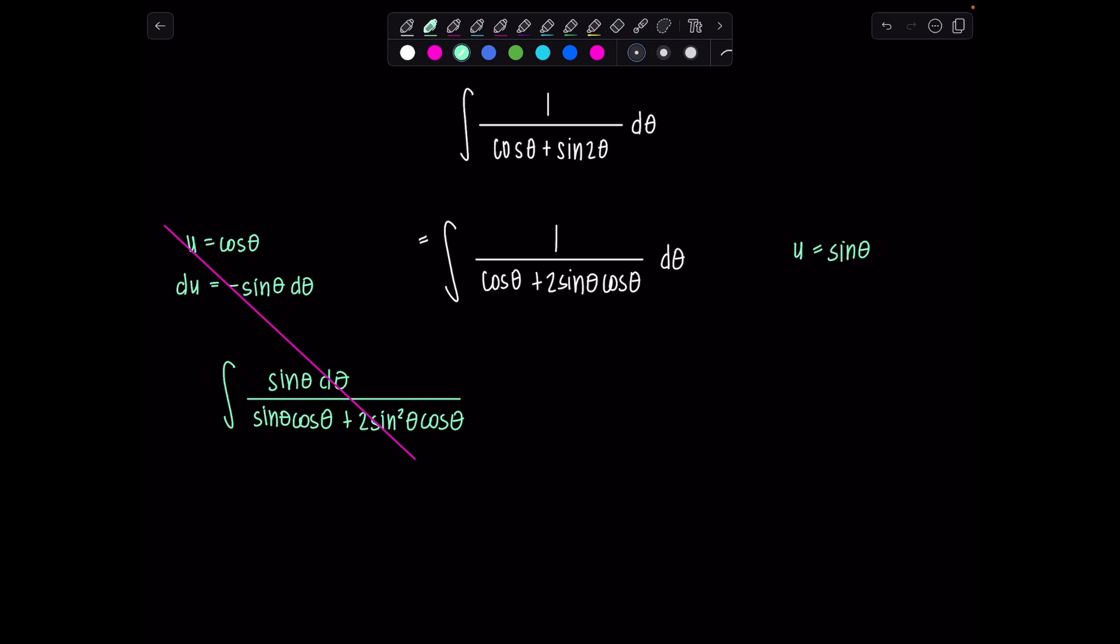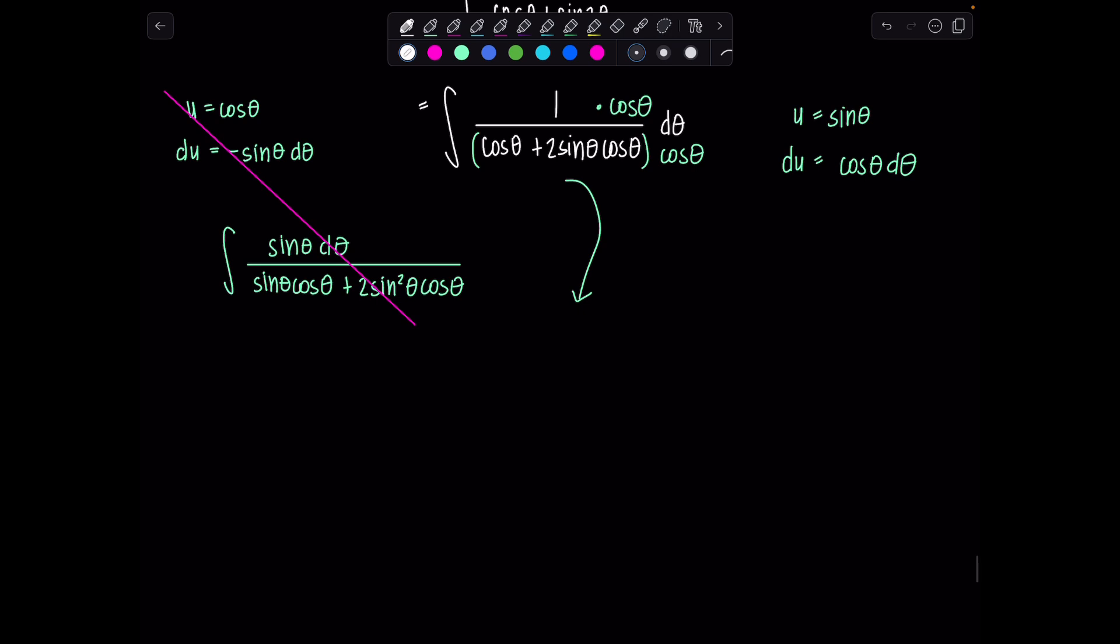Probably then u has to be sine theta, which means du would be cosine theta d theta. So if that's the substitution I'm going to try, then I need to multiply top and bottom by cosine theta. So let's see, hopefully that works out better. And it does.